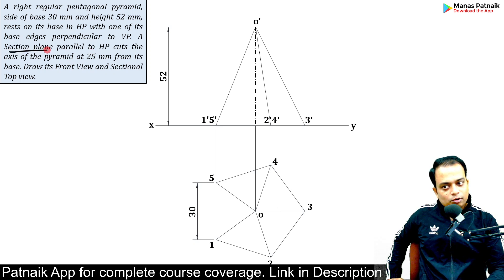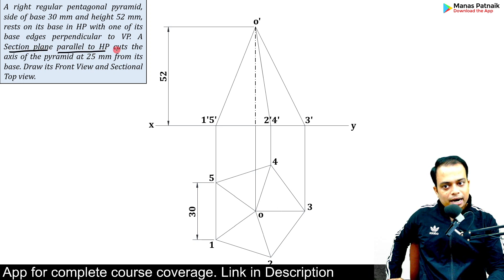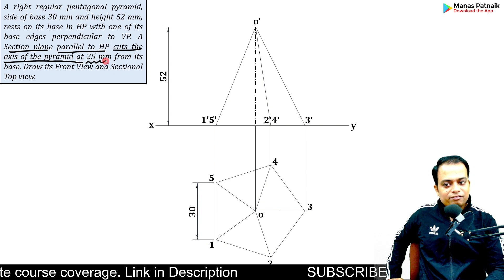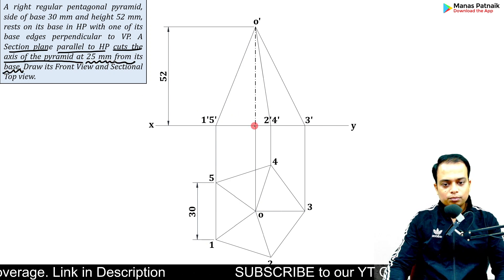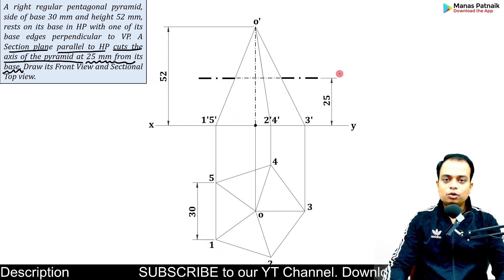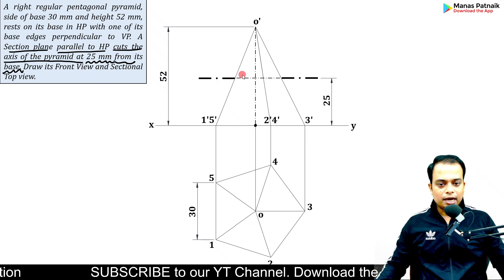Now let's talk about the cutting plane. The section plane or cutting plane is parallel to HP and it cuts the axis of the pyramid at 25 mm from its base. So from the base at a height of 25, you've got to make this cutting plane.